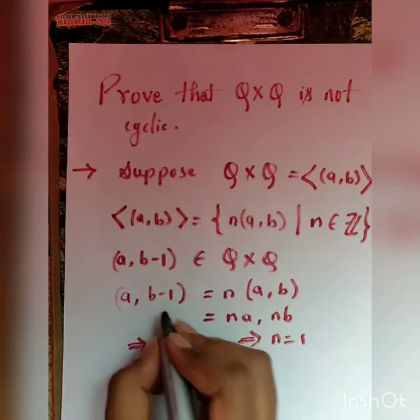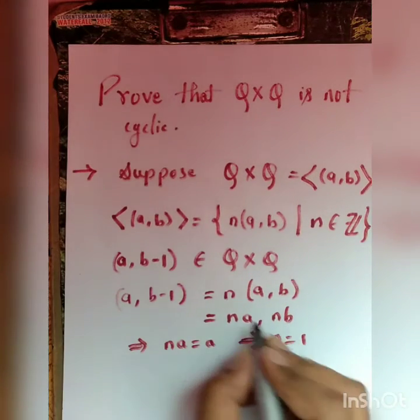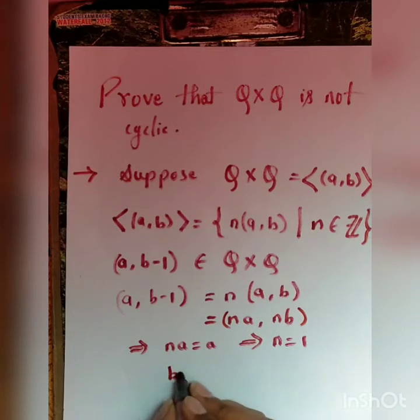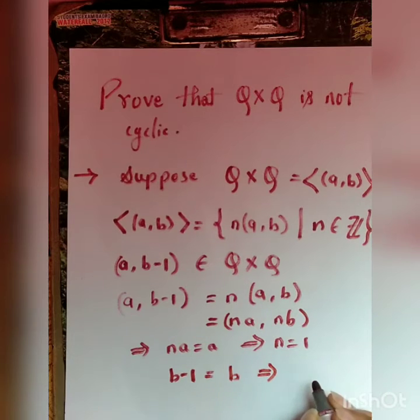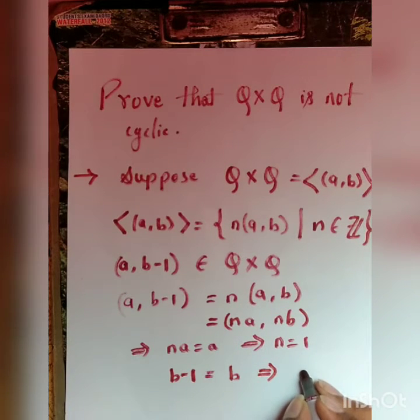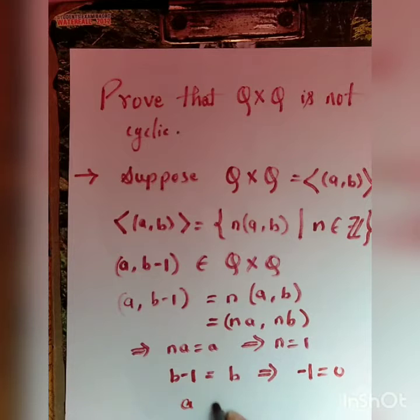Now comparing the second coordinate, we get b minus 1 equal to b, which implies minus 1 equal to 0, a contradiction.